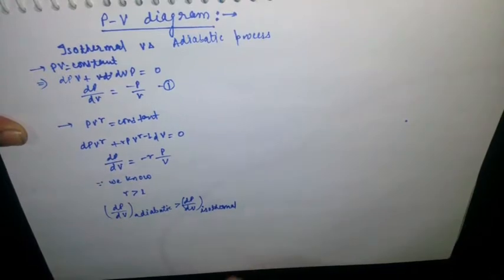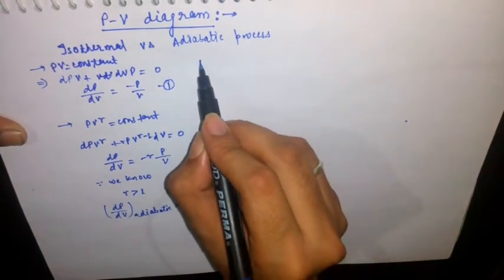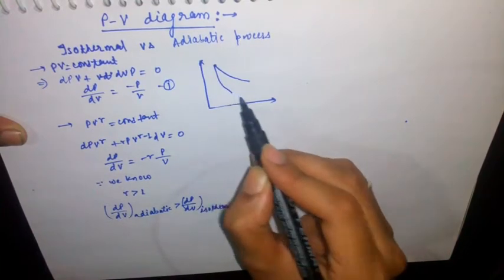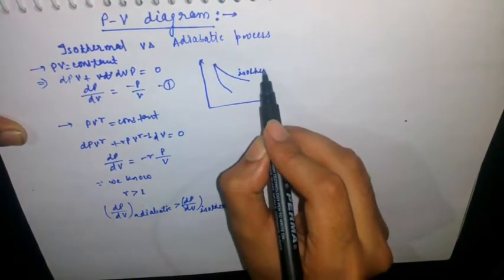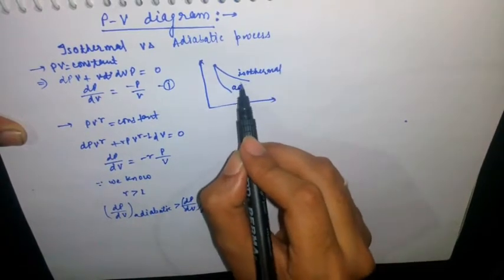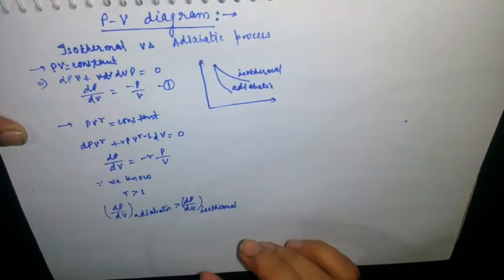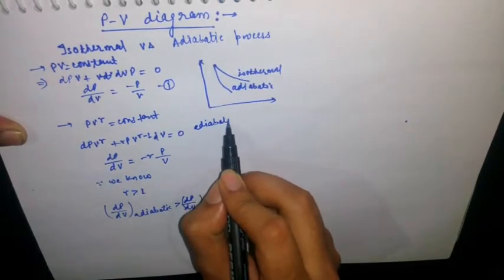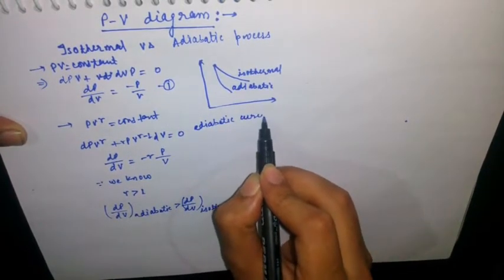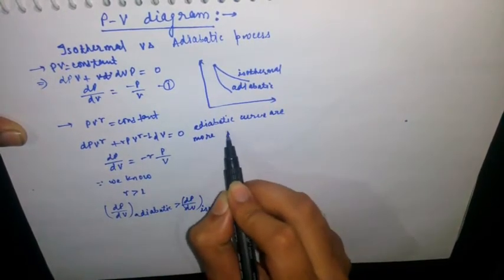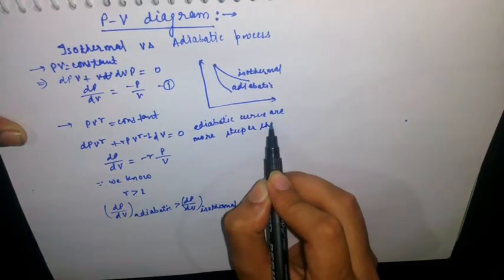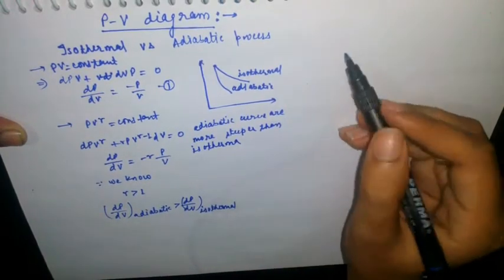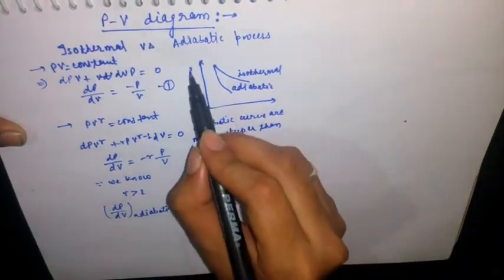If we draw the PV diagram, since the adiabatic slope is steeper, the adiabatic curve is more steep than the isothermal curve. Adiabatic curves are more steep than isothermal curves.